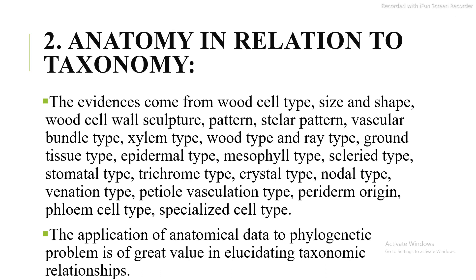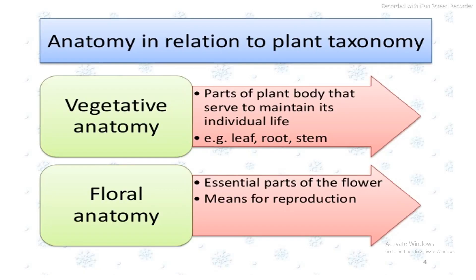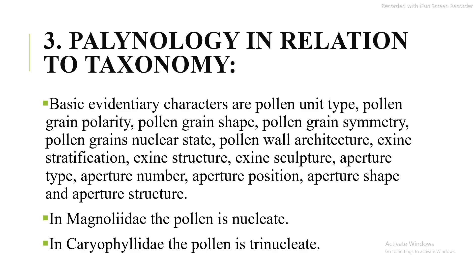The application of anatomical data to phylogenetic problems is of great value in elucidating the taxonomic relationships. Anatomy in relation to plant taxonomy has two types: first, vegetative anatomy, which includes the parts of the plant body that serve to maintain its individual life, for example leaf, fruit, and stem; second, floral anatomy, which includes the essential parts of the flower related to reproduction.